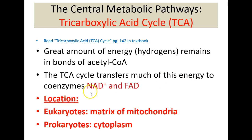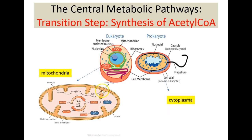The electron carriers NAD+ and FAD accept those hydrogen atoms. The location of the Krebs cycle or TCA is the matrix of the mitochondria in eukaryotes and the cytoplasm in prokaryotes. The mitochondria is an organelle in eukaryotes which consists of an outer membrane, and deep to the outer membrane there is an inner membrane, and deep to the inner membrane there is a matrix.